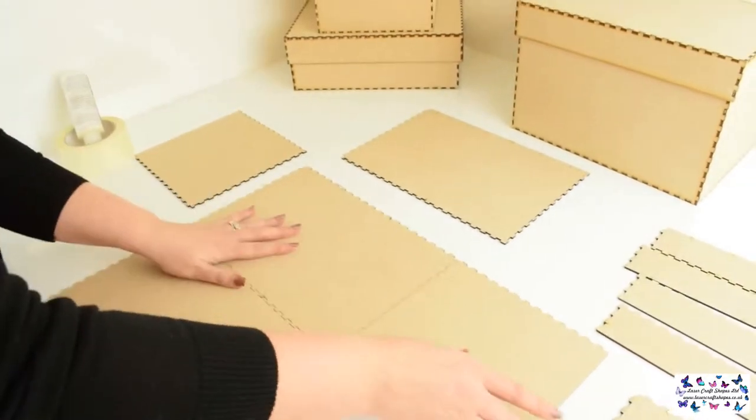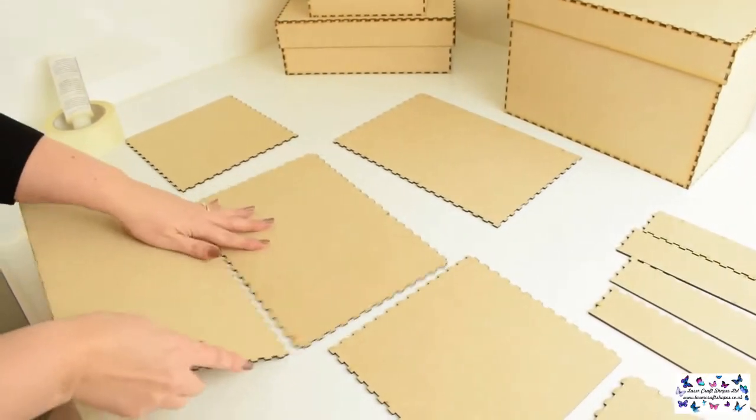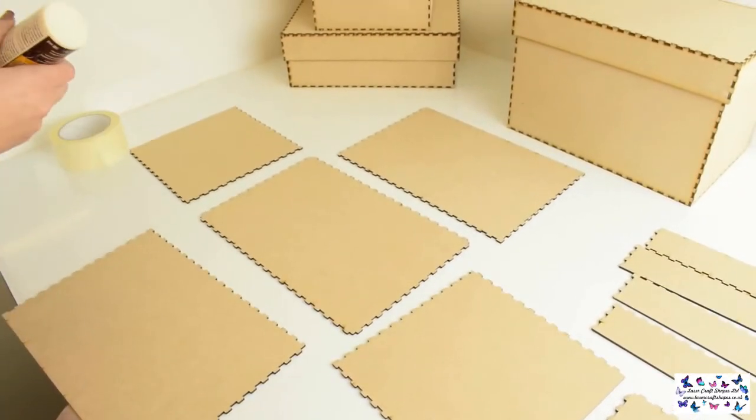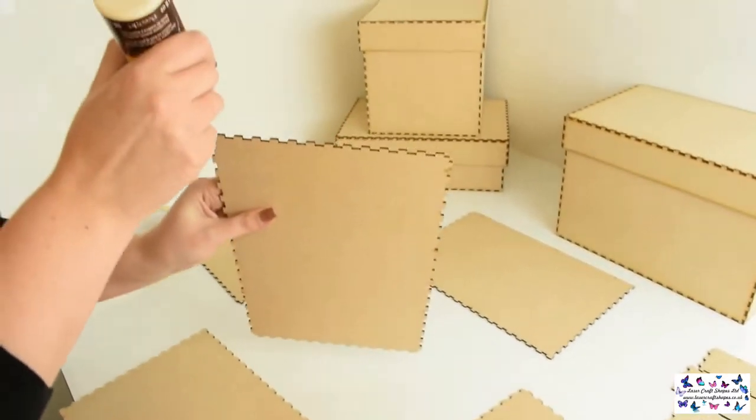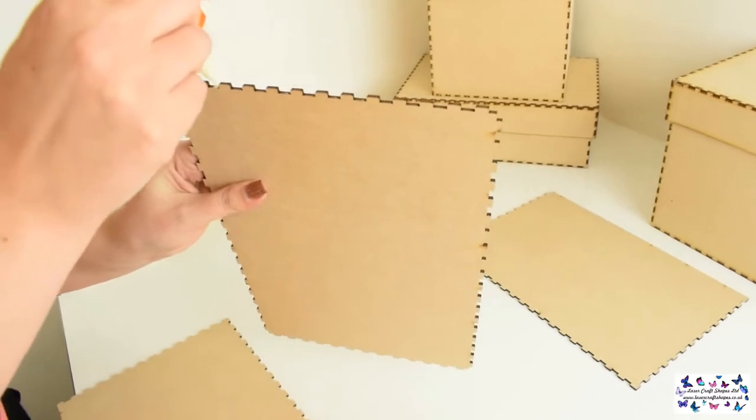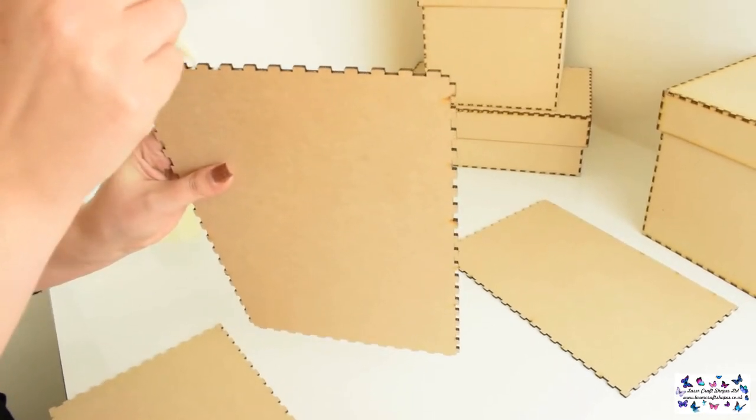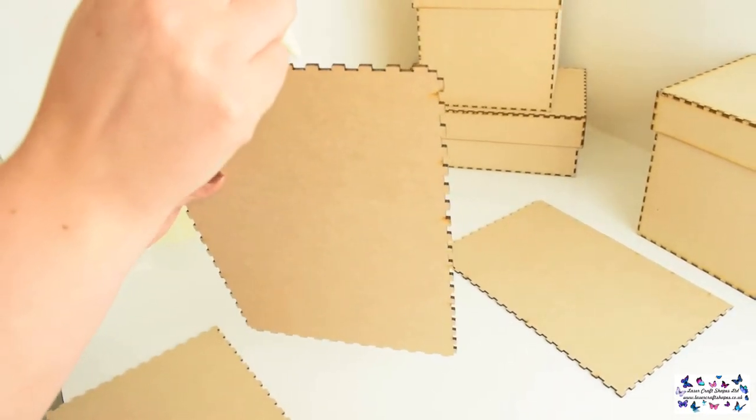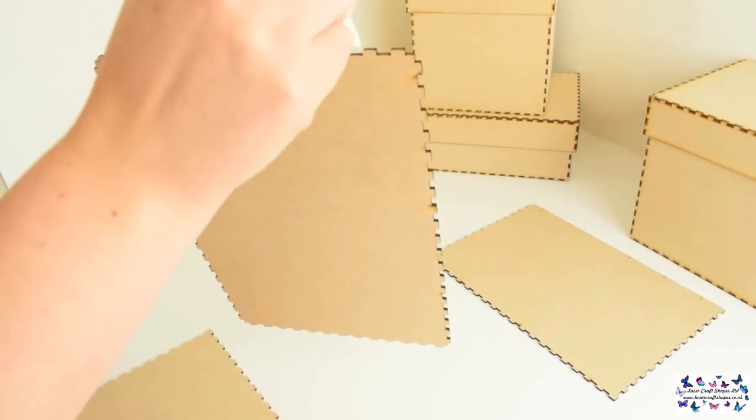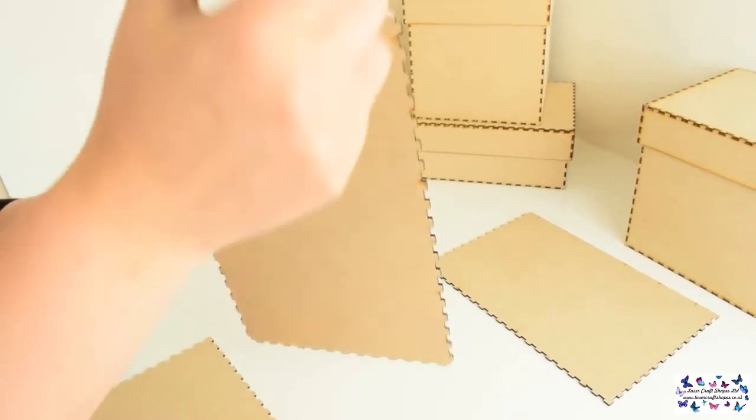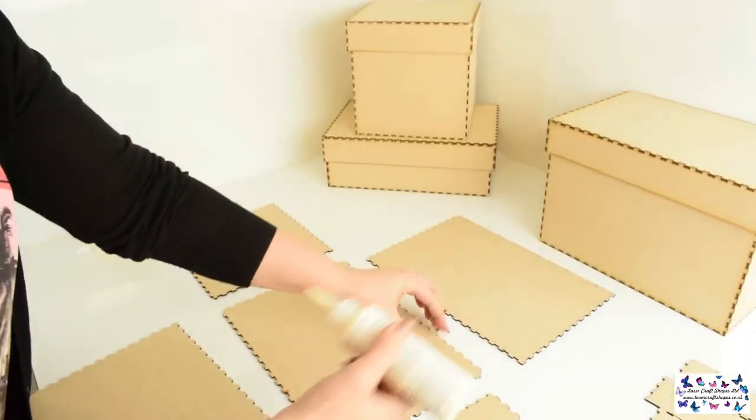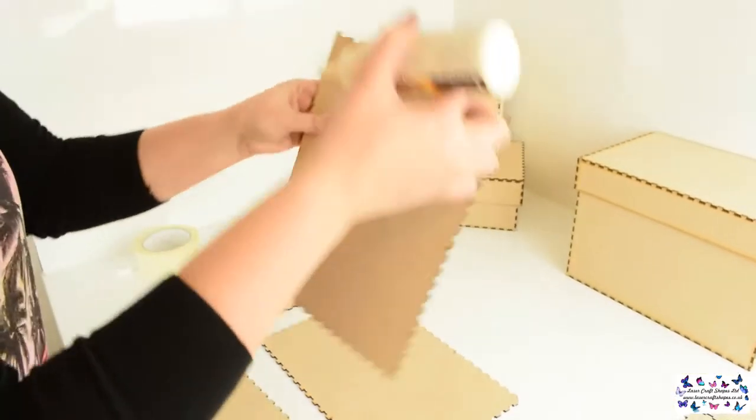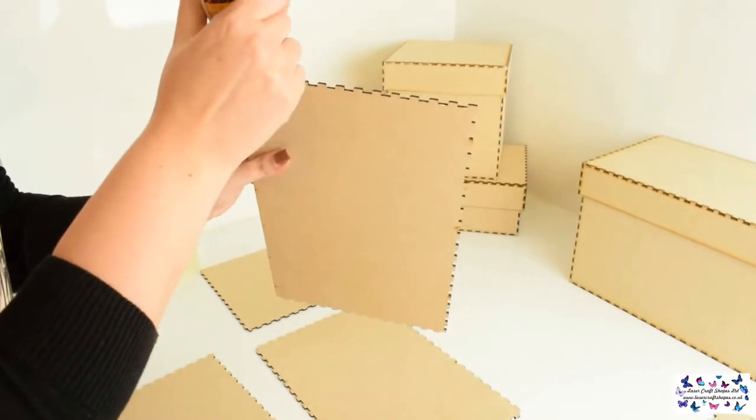Once done you can take all your pieces apart again. Take the wood glue and then we are going to apply this to all the lower toothed areas. You then want to apply the wood glue to the rest of the sides. Once done you move on to your side pieces and again glue the lower toothed areas on there.